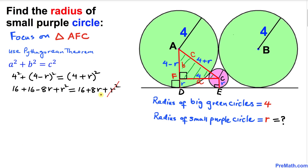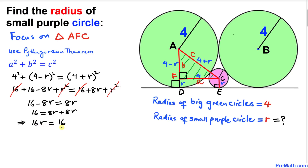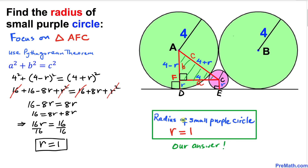We can see that r squared cancels with r squared, and the positive 16 cancels with the other positive 16, leaving us with 16 minus 8r equals 8r. So 16r equals 16. Dividing both sides by 16, lowercase r equals 1. Thus, the radius of this small purple circle is 1. Thanks for watching, and please don't forget to subscribe to my channel for more exciting videos!